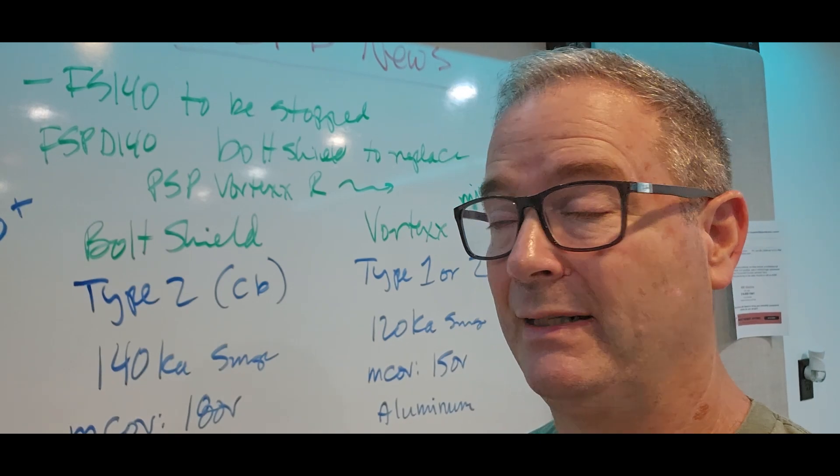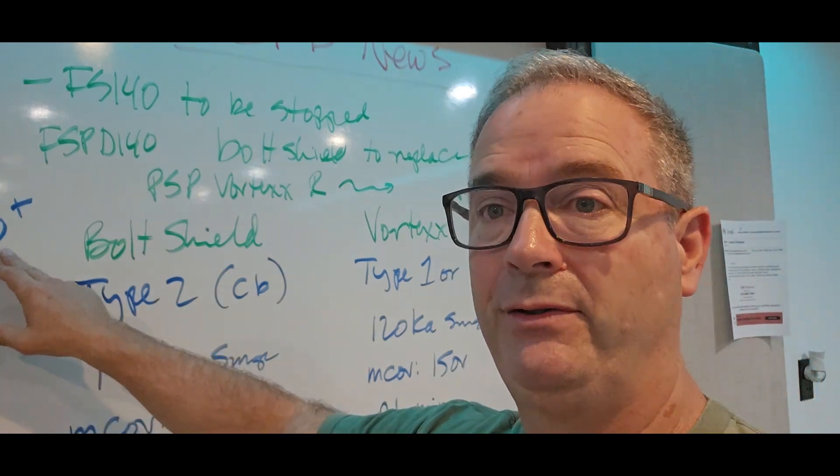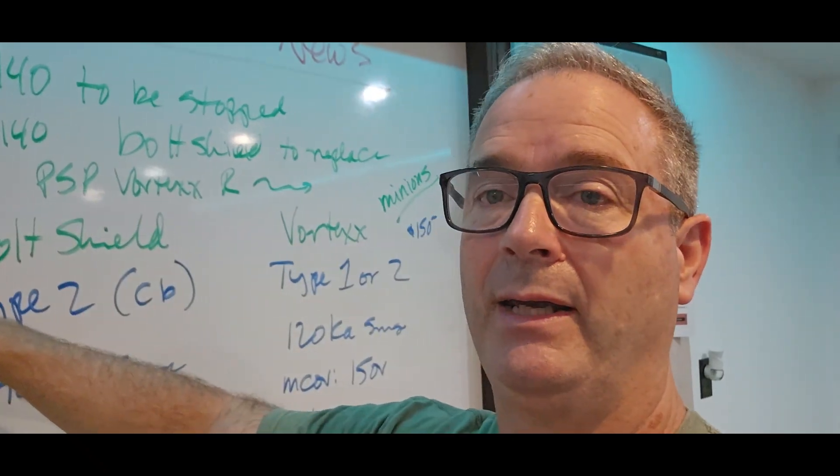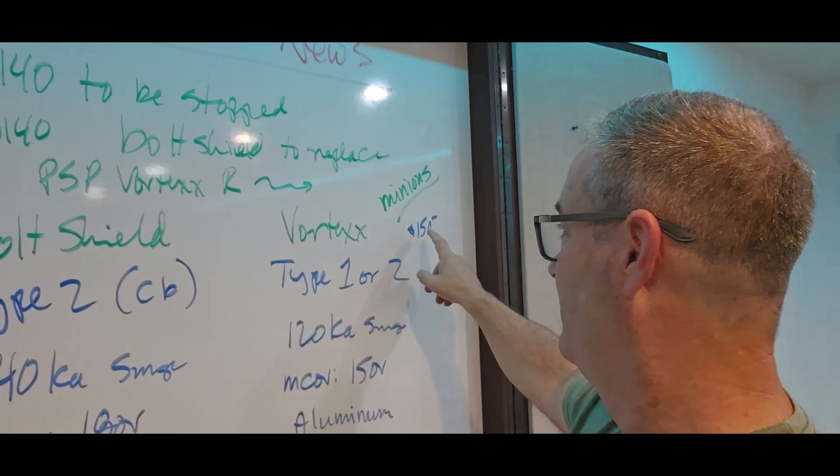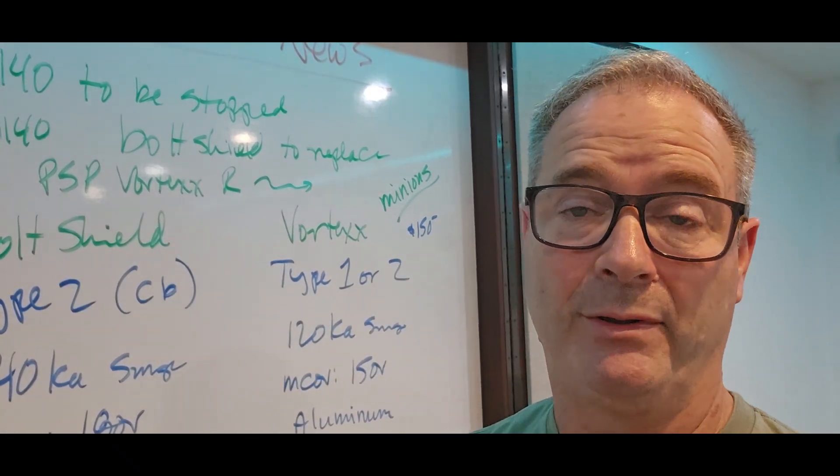And then the pricing right now, the Bolt Shield is $200 plus where you can get it, and the PSP, the Vortex, is around between $120-$130 on up, but it's available and it's easy to get to and they're easy to deal with.